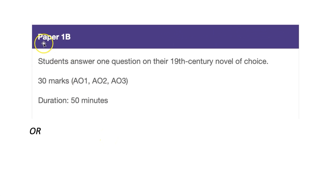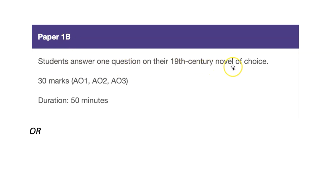Or, you get the option of doing Paper 1B. This involves answering one question on the 19th century novel of your choice. This is also 30 marks and you also get 50 minutes, which is five minutes longer than the old paper.